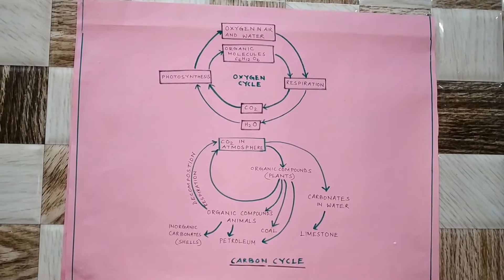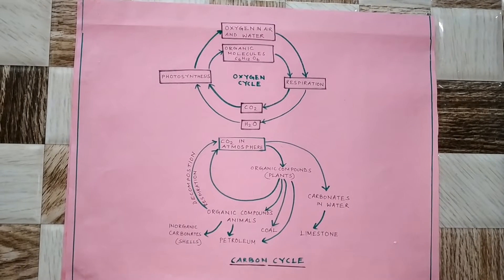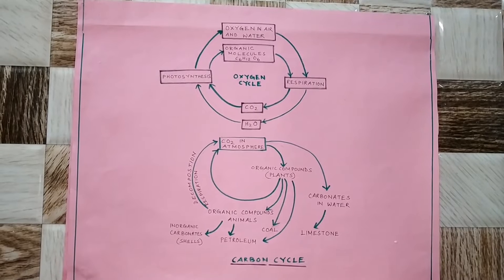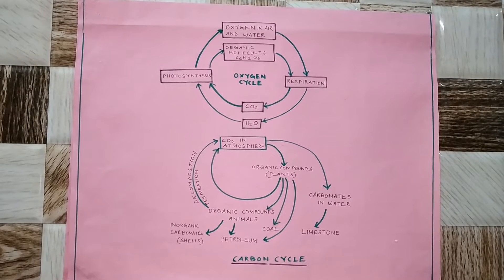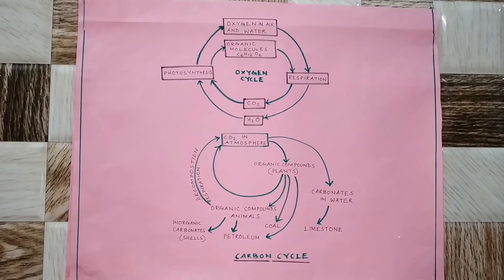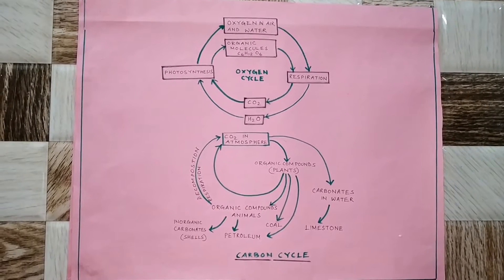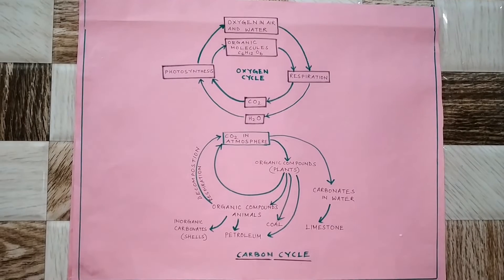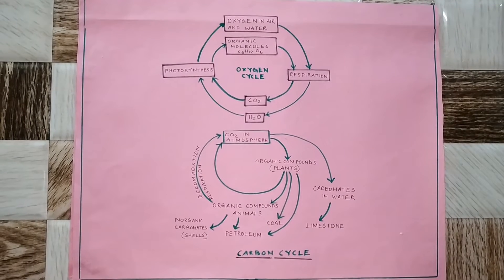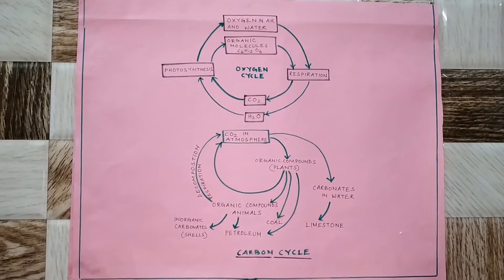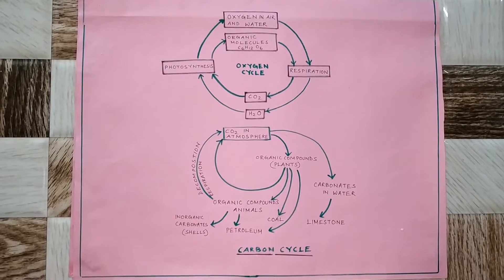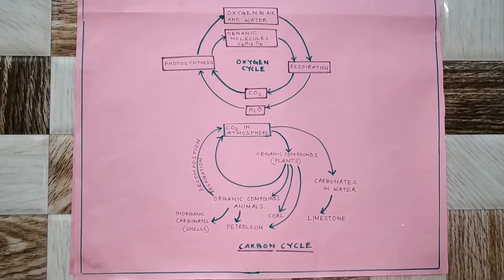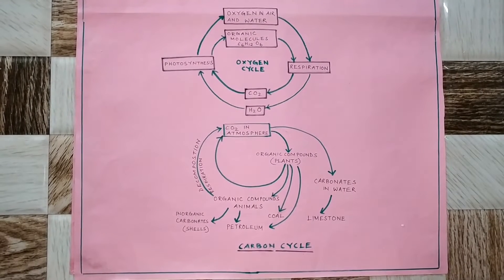Oxygen is used in three processes: combustion, respiration, and in the formation of oxides of nitrogen. Anything we burn is known as combustion, and oxygen is required for it — so oxygen is used in the burning process.